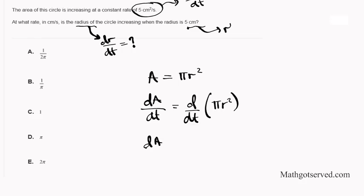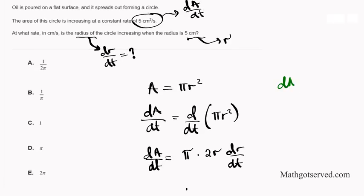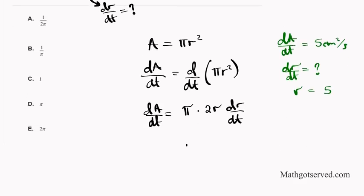Differentiating both sides with respect to time implicitly: dA/dt = π times 2r times dr/dt. We can factor out π and apply the power rule and chain rule to get dA/dt = 2πr · dr/dt. Now we plug in what we know: 5 = π times 2 times 5 times dr/dt, which simplifies to 5 = 10π · dr/dt.